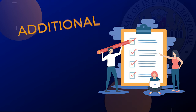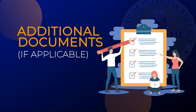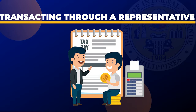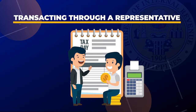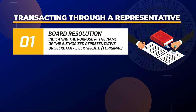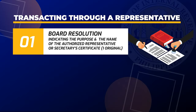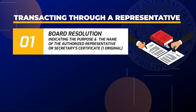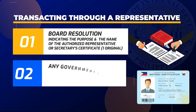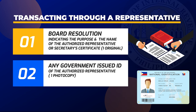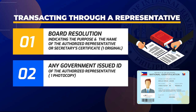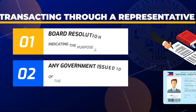You also need to submit additional documents for the following. If transacting through a representative: board resolution indicating the purpose and name of the authorized representative, or secretary's certificate, one original copy; and any government-issued ID of the authorized representative, one photocopy.